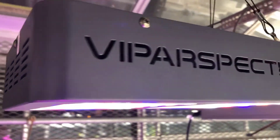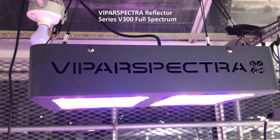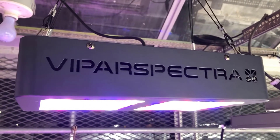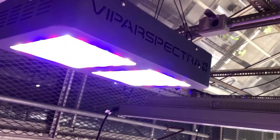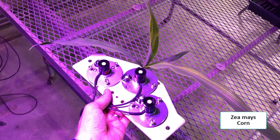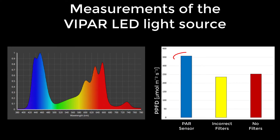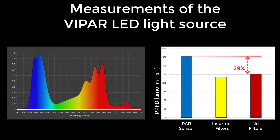Here we have one more LED fixture from Vipar. We take measurements underneath the light source at canopy level. The PAR sensor measures at about 350. The sensor with the incorrect or low-quality filters underestimates by about 34%, most likely attributed to the lack of green from this LED. The sensor without any filters also underestimates by about 30%, probably attributed to the lack of red and far-red light. Where we can get into trouble is using either of these inaccurate sensors to control our lights — we'd end up cranking up the light source and either burning through energy or burning our vegetation.